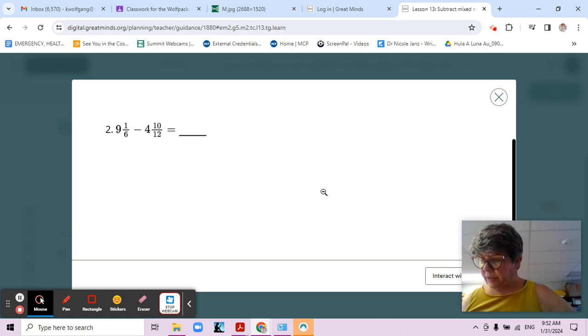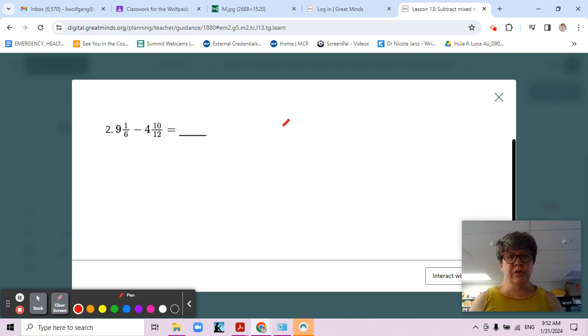Not quite ready to subtract because we do not have like units. Looks related because we have a six and a twelve, and six times two is twelve, so let's change our sixths to twelfths. One sixth - using that frame to make sure we're not taking shortcuts. One times two is two and six times two is twelve, so now we have nine and two twelfths.